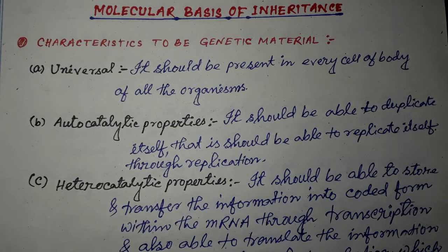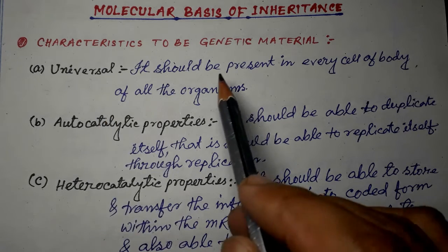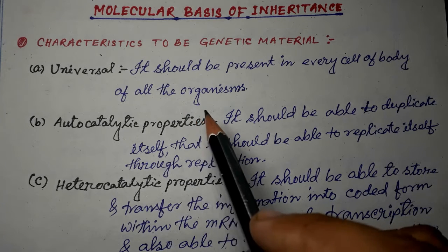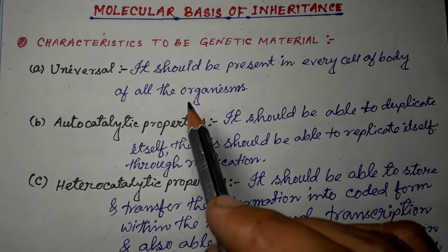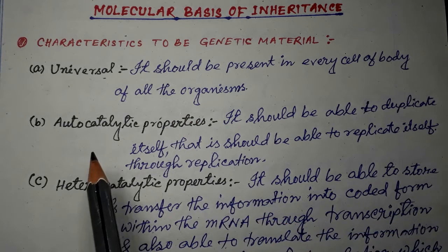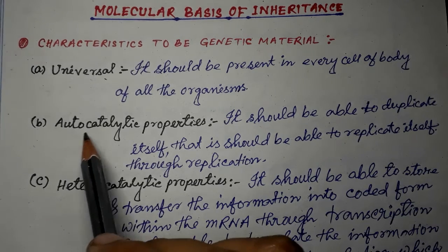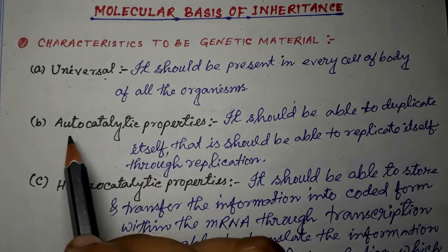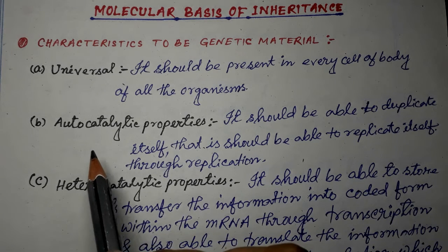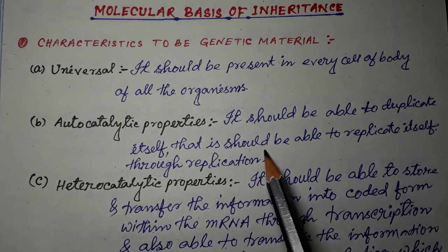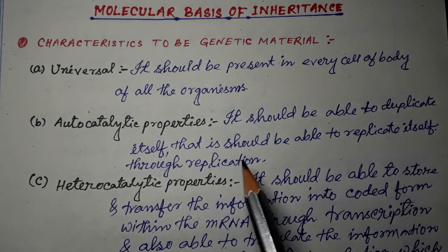The first characteristic is that it should be universal — that is, a genetic material should be present in every cell of the body of all organisms. The second characteristic is autocatalytic properties. Auto means self, catalysis means synthesized. So it should be able to duplicate itself, that is, it should be able to replicate itself through replication.